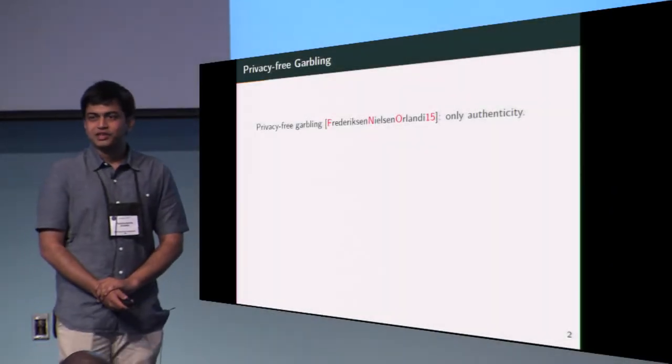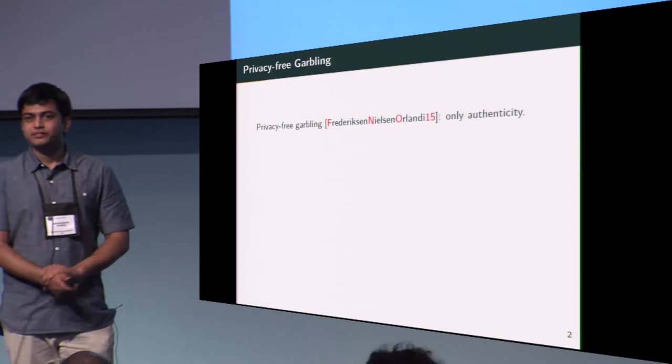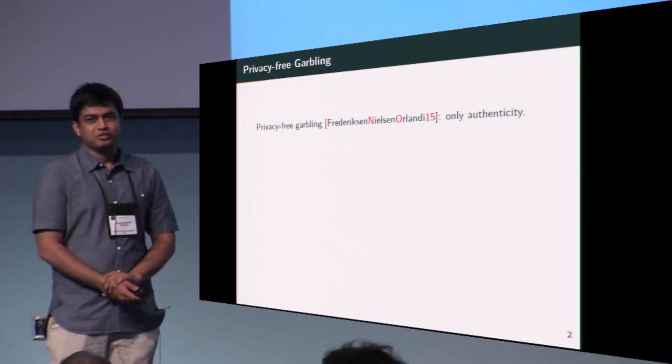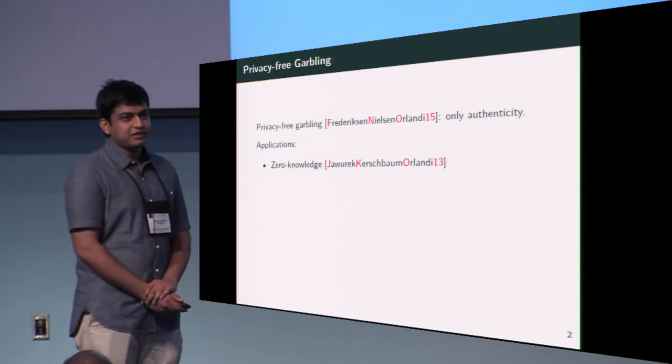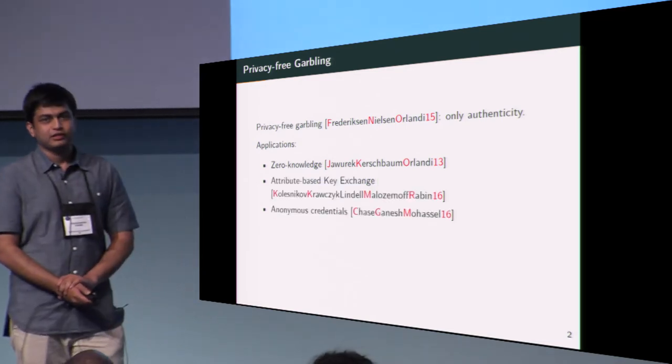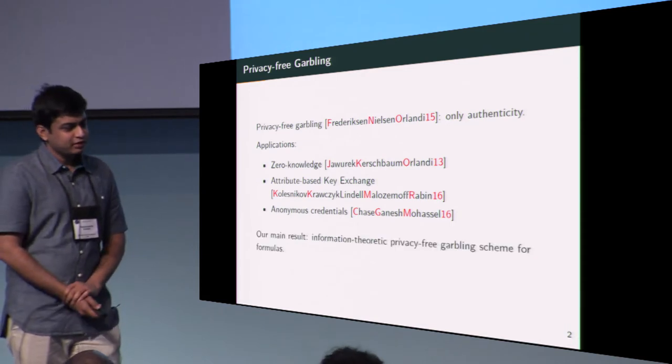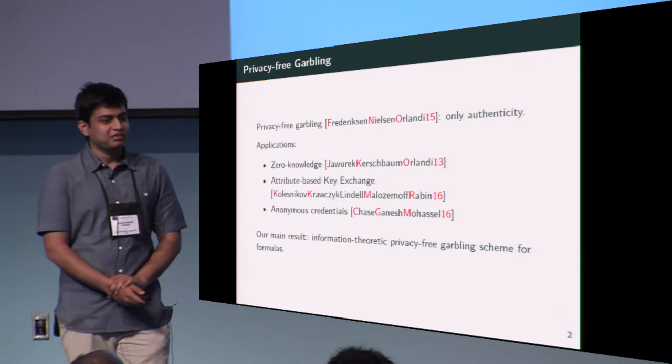Privacy-free garbling schemes essentially aim to achieve only authenticity with increased efficiency by sacrificing privacy. Applications of privacy-free garbling include zero knowledge, attribute-based key exchange, and anonymous credentials. Our main result in this work is an information theoretic privacy-free garbling scheme for formulas.